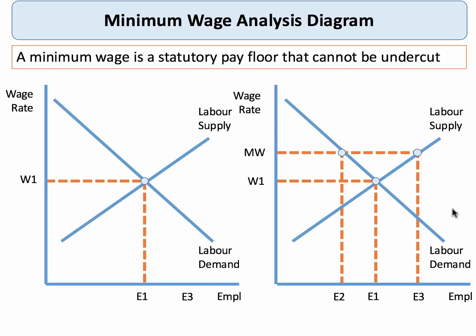So we've set the minimum wage here at MW — there's our pay floor. Officially, the wage can't fall below it. The consequence normally is that the supply of labour expands; more people are willing and able to work at a higher wage. But it could also be the case that the demand for labour from employers could contract. So labour supply could expand to E3, labour demand could contract to E2, and as a result you could see an excess supply of labour.